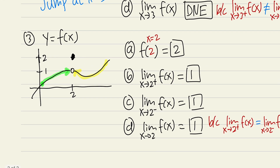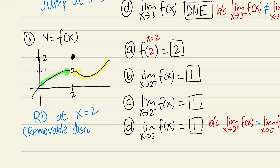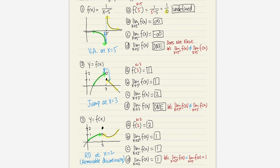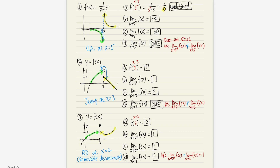This third situation is called a removable discontinuity — RD for short — where the function is still discontinuous at the value but the two-sided limit exists. If you understand all three cases — vertical asymptote, jump discontinuity, and removable discontinuity — then you should be good for all limit questions from a graph. Check out the next video where I'll talk about limits at infinity from a graph.